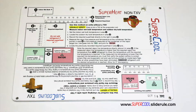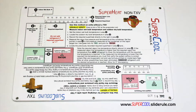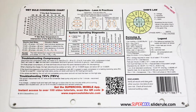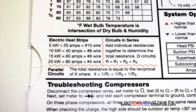Thankfully, those days are gone. This one tool will allow you to charge a system with R22 or R410A in either the superheat or subcooling method. The back cover contains required formulas, capacitor rules and practices, and a wet bulb conversion chart.